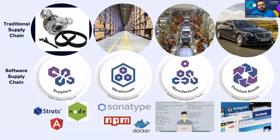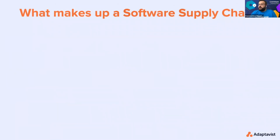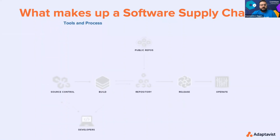Everyone has a software supply chain — some organizations just call it different names. You still have your suppliers, warehouses, manufacturers, and finished goods, the same way you have it in the manufacturing industry. On the software supply chain, first you have your tools and processes. What you see on your screens is your typical SDLC, or software development lifecycle. Components move from one place to another depending on need. Developers pull code from their source control systems, pushing into their CI/CD tools like Jenkins, Azure DevOps, GitLab, etc., building applications with components from different repositories.